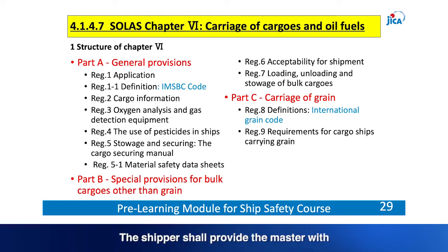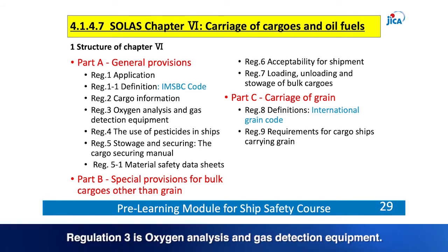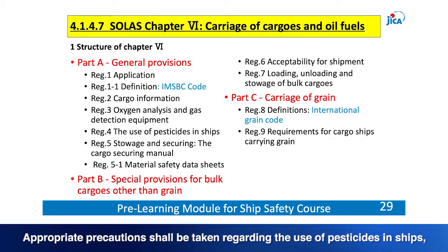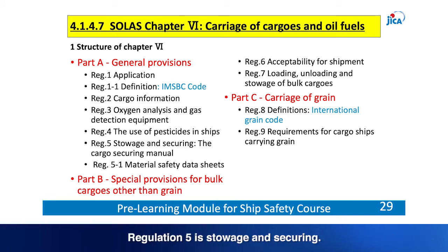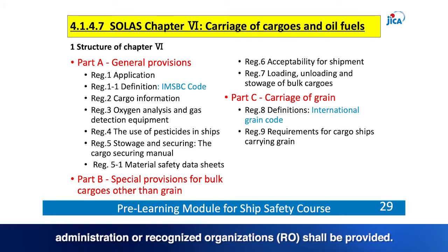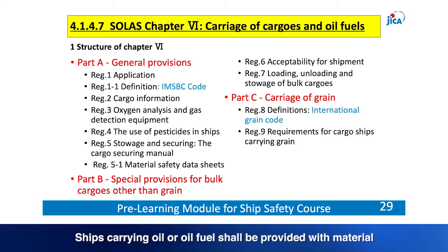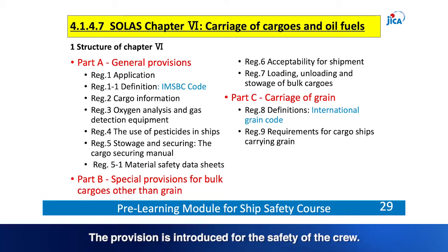Regulation 2 covers cargo information — the shipper shall provide the master with cargo information sufficiently in advance of loading. Regulation 3 requires an appropriate instrument for measuring the concentration of gas or oxygen in the air. Regulation 4 is about the use of pesticides in ships — appropriate precautions shall be taken, particularly for fumigation to remove rats, harmful insects and bacteria. Regulation 5 requires a cargo securing manual approved by the administration or recognised organisations (RO). Regulation 5-1 requires that ships carrying oil or oil fuel be provided with material safety data sheets prior to loading or bunkering.